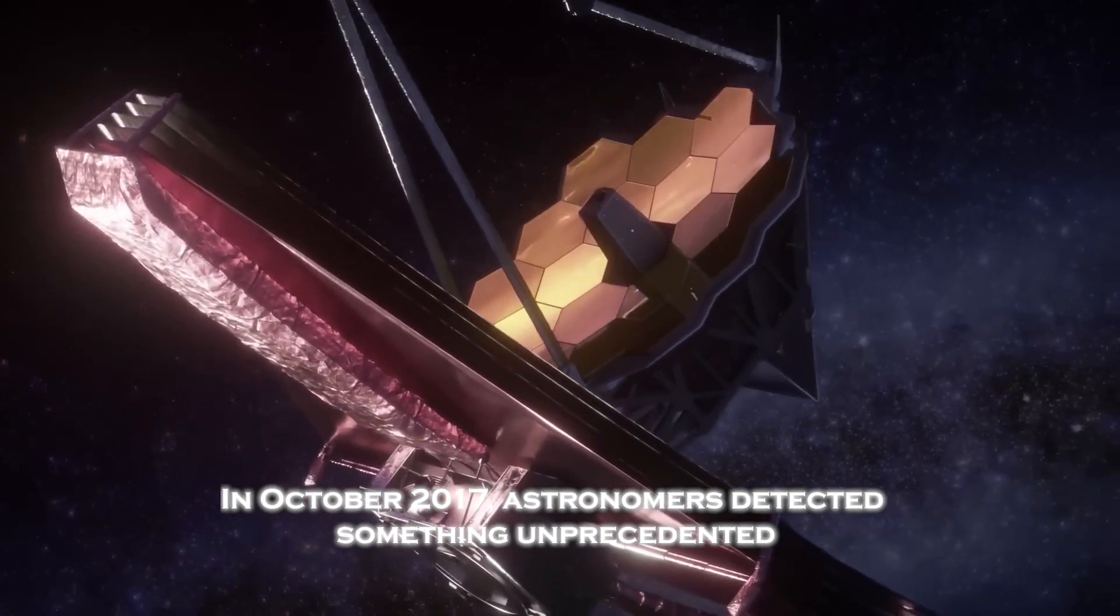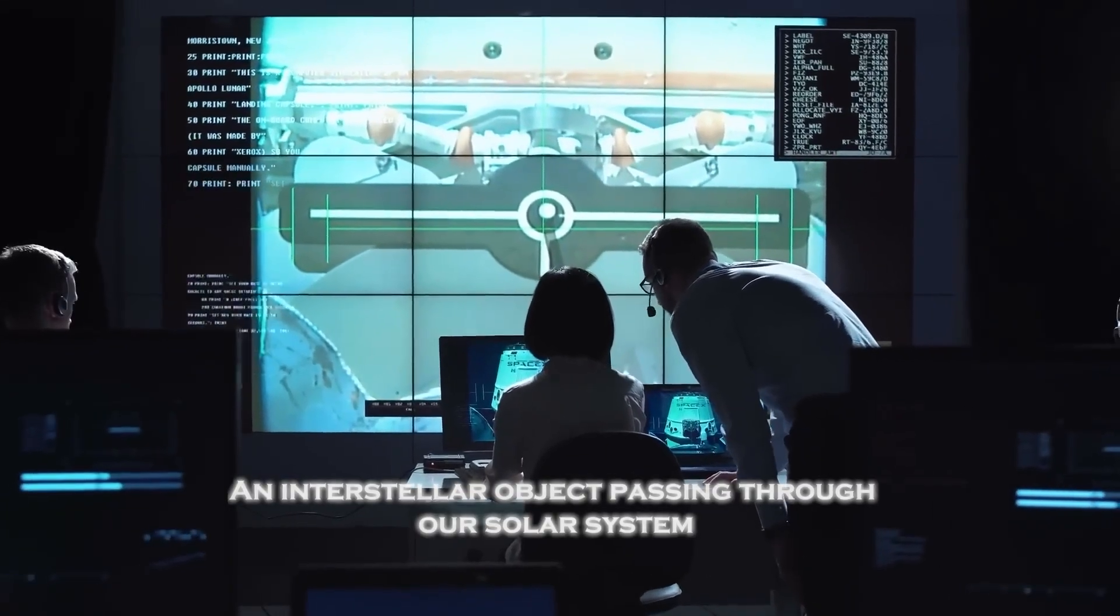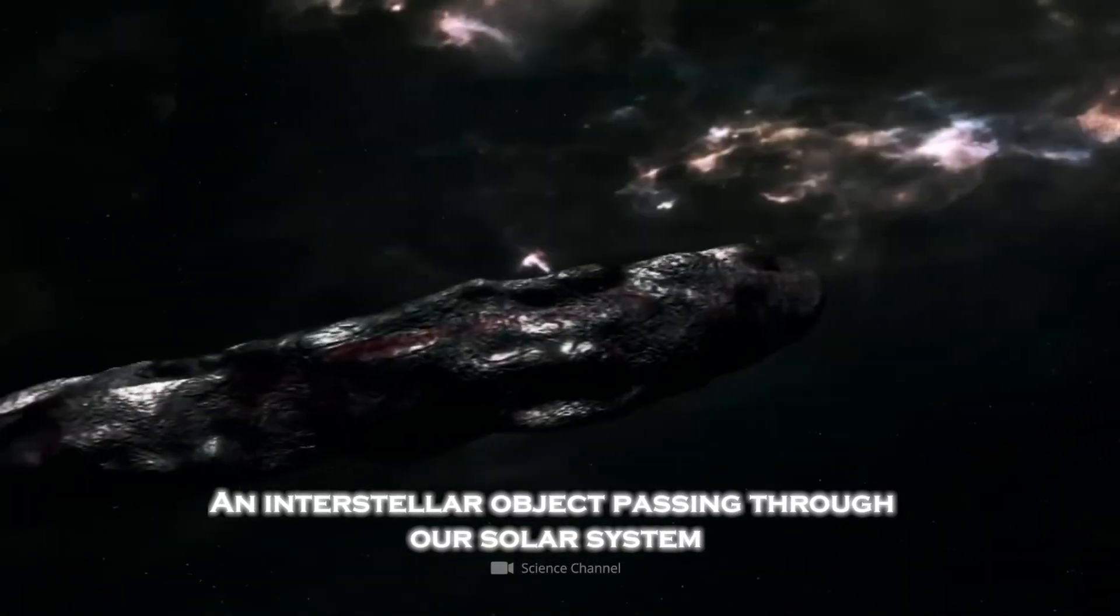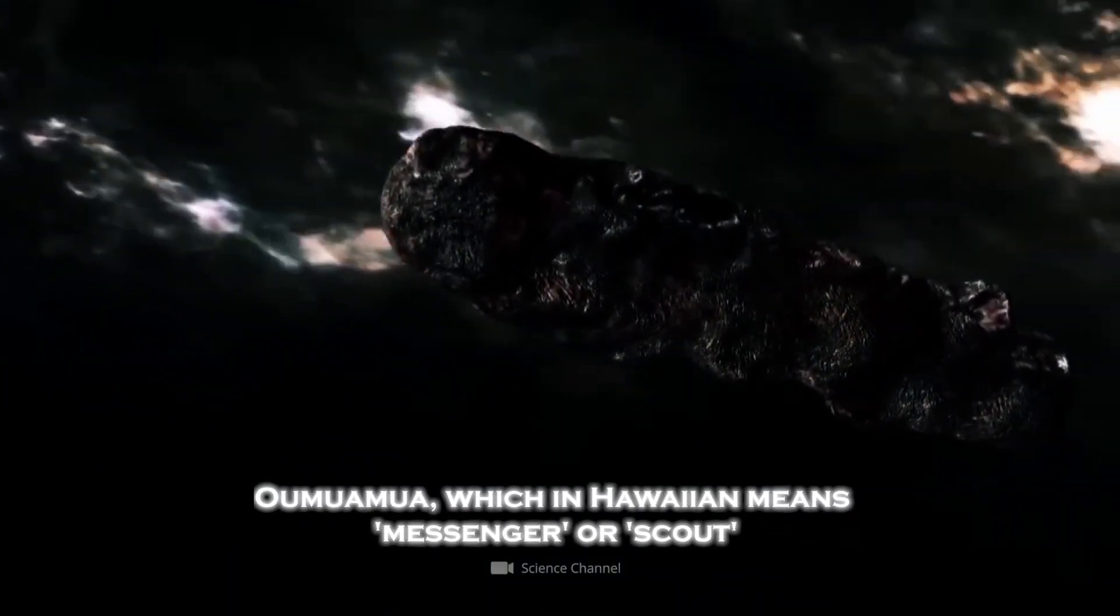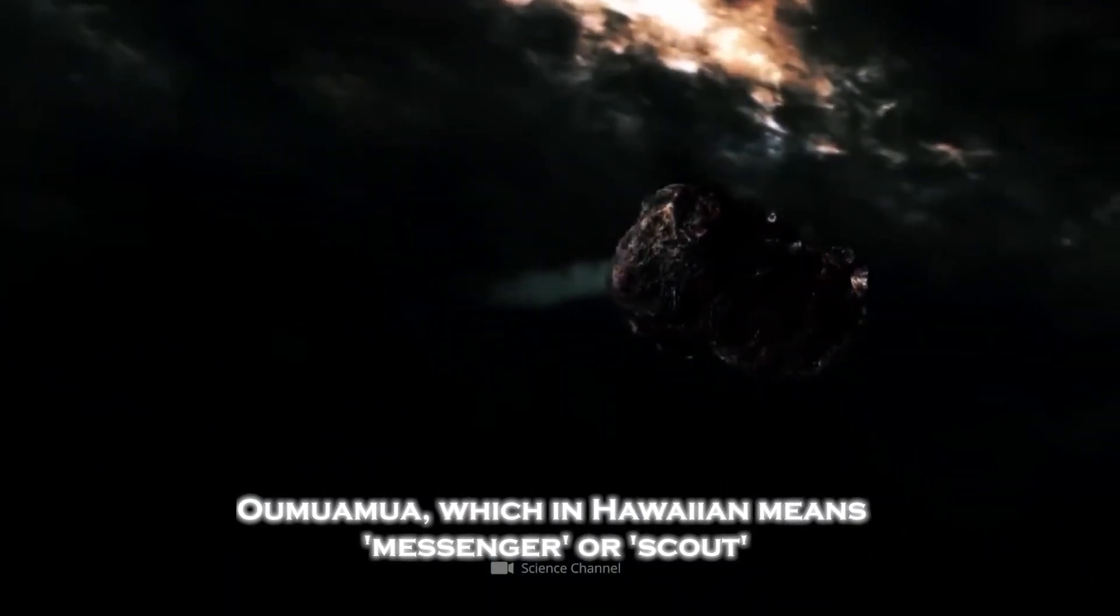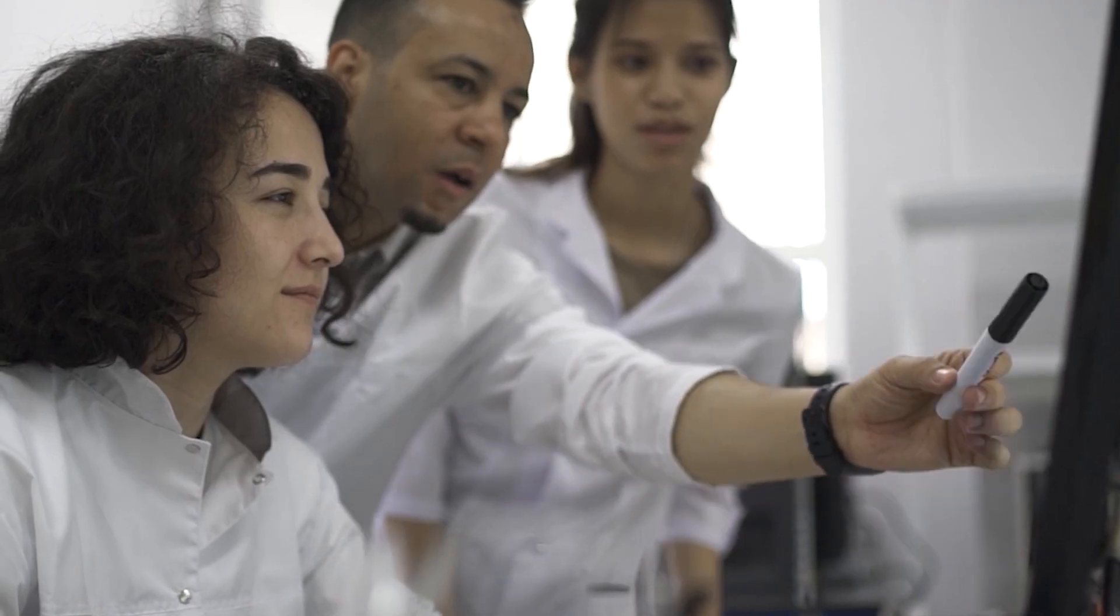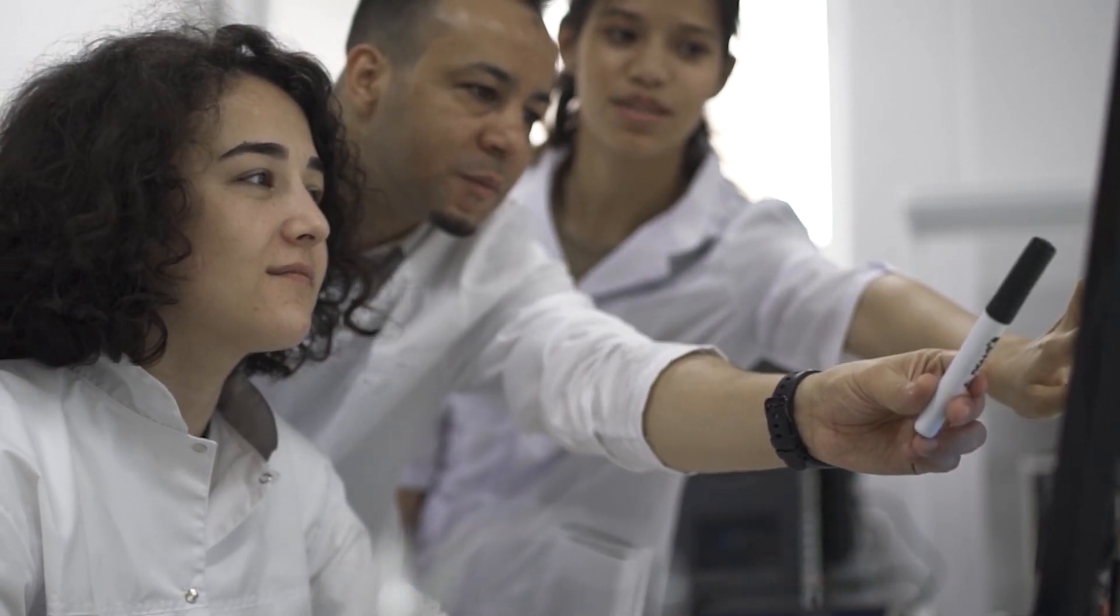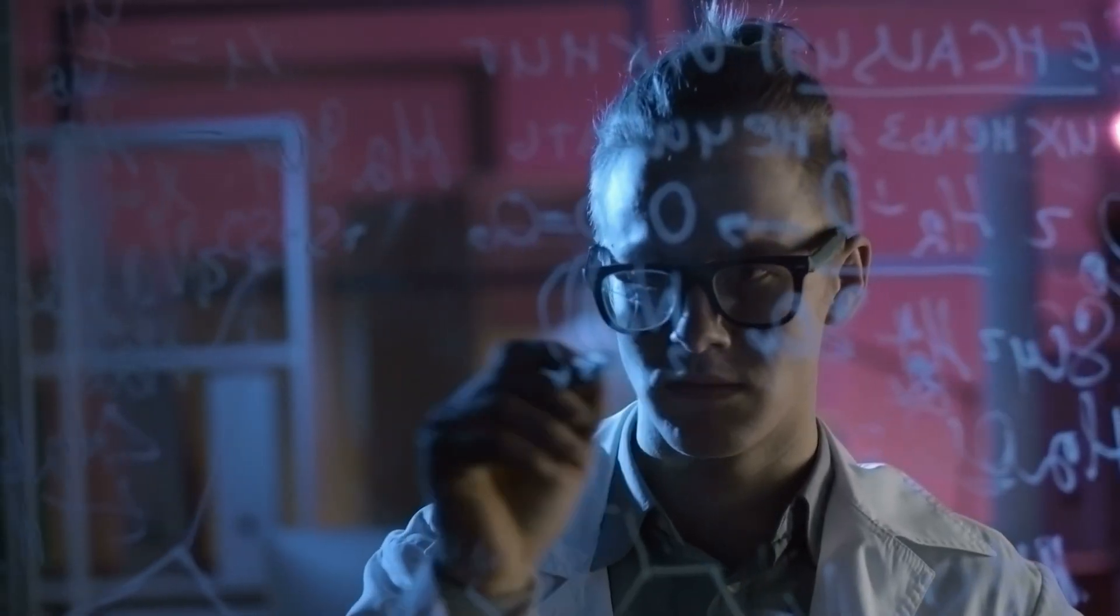In October 2017, astronomers detected something unprecedented: an interstellar object passing through our solar system. They named it Oumuamua, which in Hawaiian means messenger or scout. Since then, it has been the subject of intense scientific debate and speculation. Its trajectory, its elongated shape, and inexplicable behavior made it one of the greatest enigmas of modern astronomy.